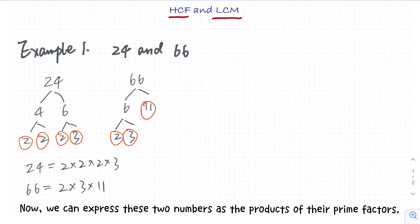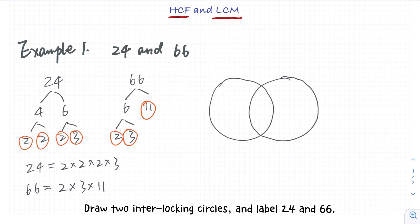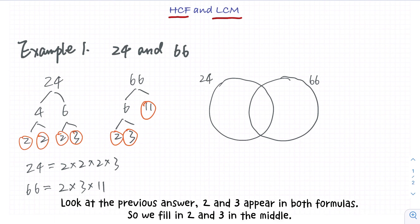Then how to find the HCF and LCM? We can draw a diagram to help understand the process. Draw two interlocking circles and label 24 and 66. In the middle, we fill in the numbers that appear in both answers of prime factors. Look at the previous answer: 2 and 3 appear in both formulas, so we fill in 2 and 3 in the middle.